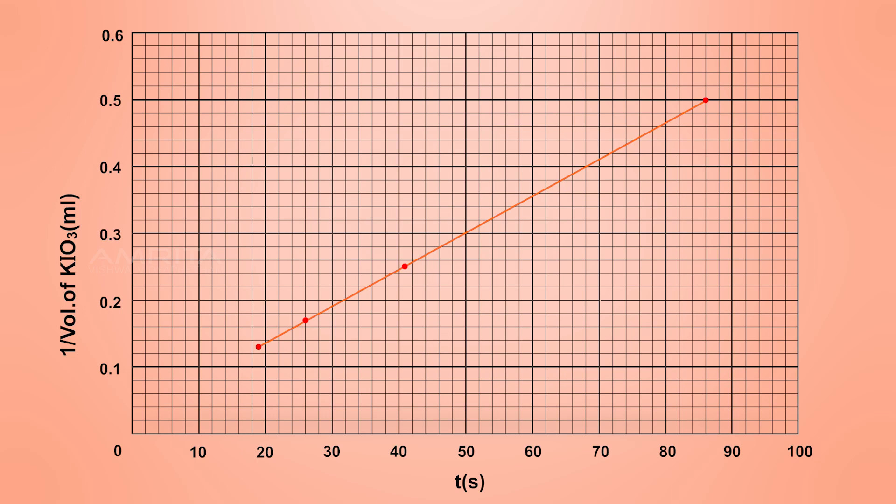From the graph it is clear that the rate of reaction between potassium iodate and sodium sulphite increases with increase in concentration of potassium iodate.